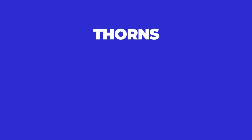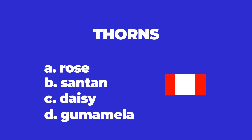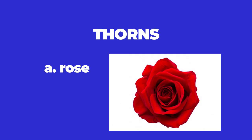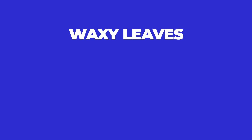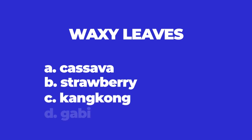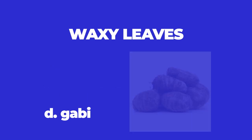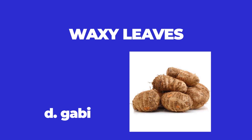Number 2: Thorns. A. Rose. B. Santan. C. Daisy. D. Gumamela. The answer is A — rose. Number 3: Waxy leaves. A. Sava. B. Hong Kong. C. Gabi. The answer is D — Gabi plant has waxy leaves.